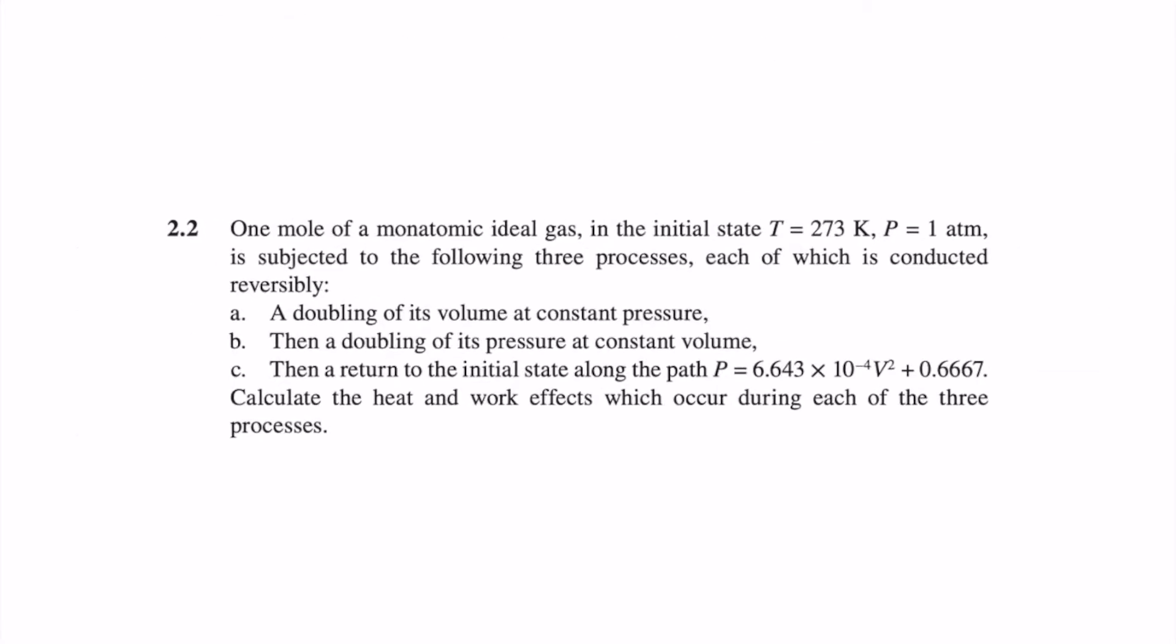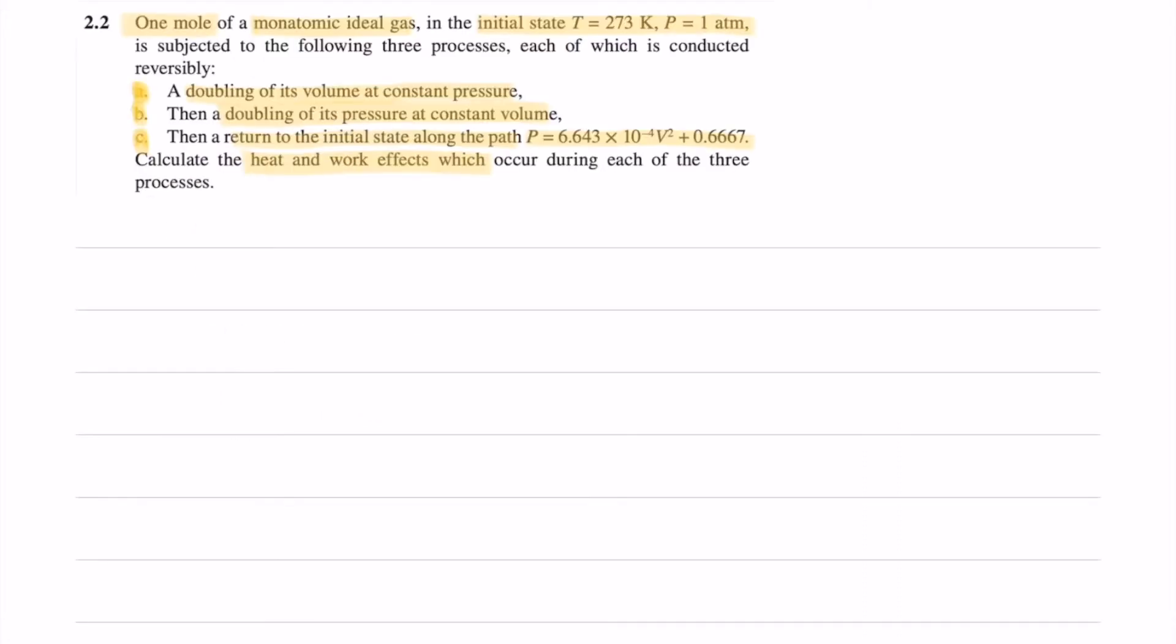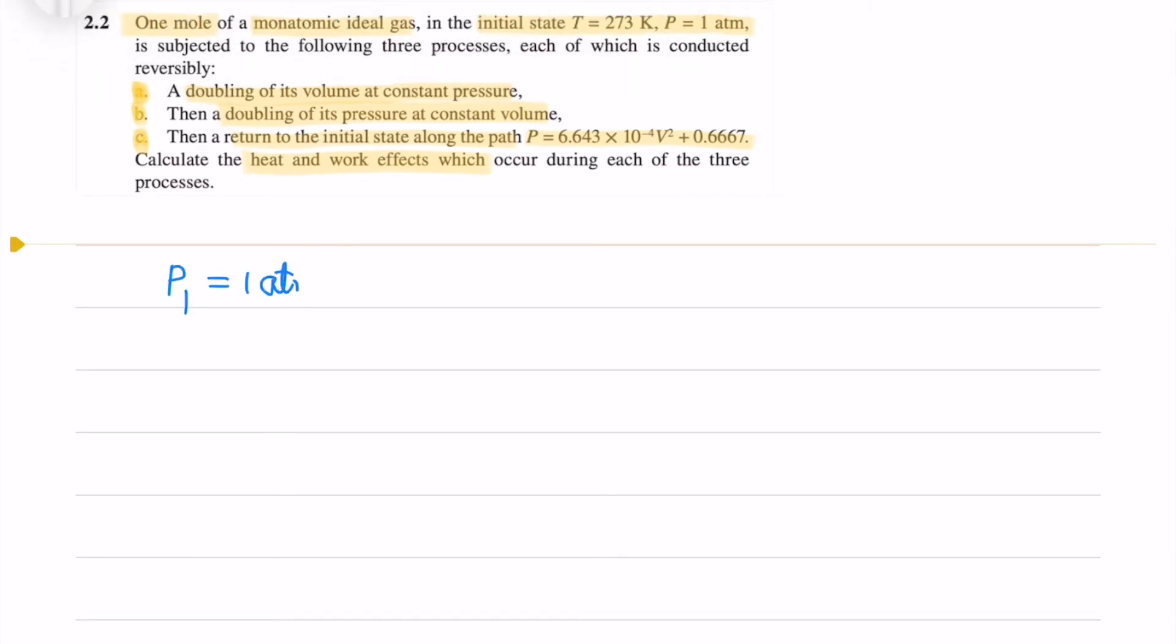Hi guys! Today I want to discuss classical 2.2 question. So we have one mole of monoatomic ideal gas at initial state temperature and pressure. So we have three processes. So we have to find heat and work. So first process is constant pressure, then constant volume, and then it's an arbitrary path. So we have the first state pressure and temperature is this.